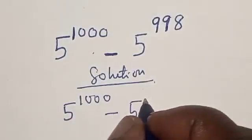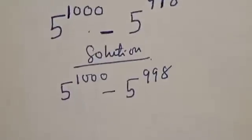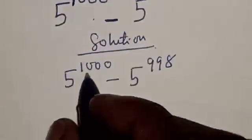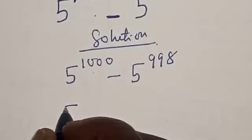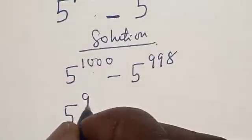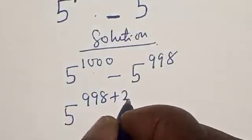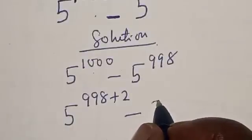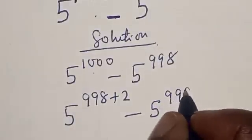We have 5 raised to power 1000 minus 5 raised to power 998. The term 5 raised to power 1000 can be expressed as 5 raised to power 998 plus 2, minus 5 raised to power 998.